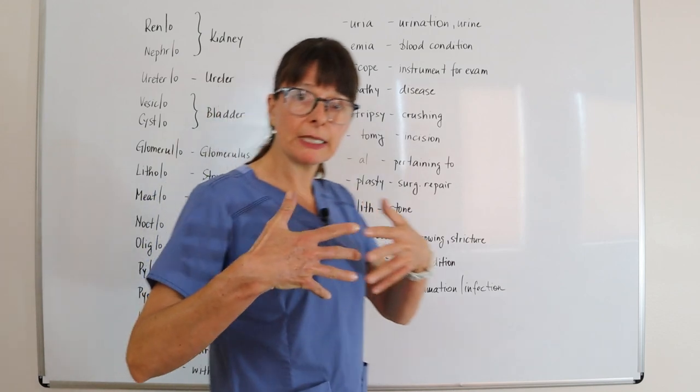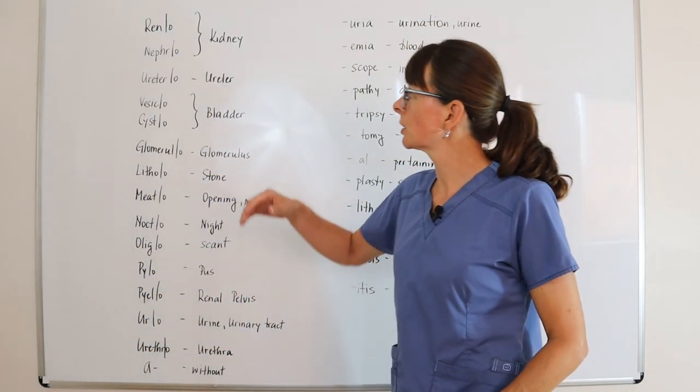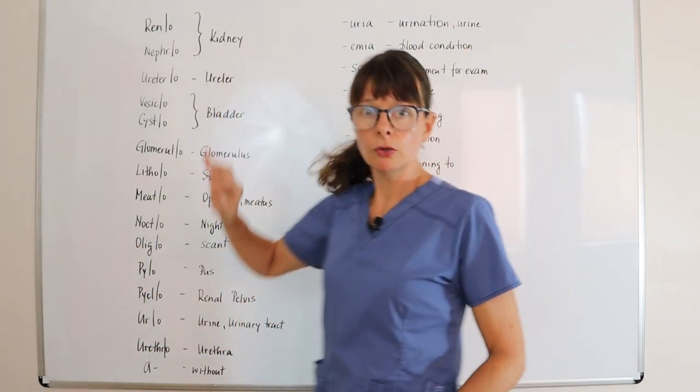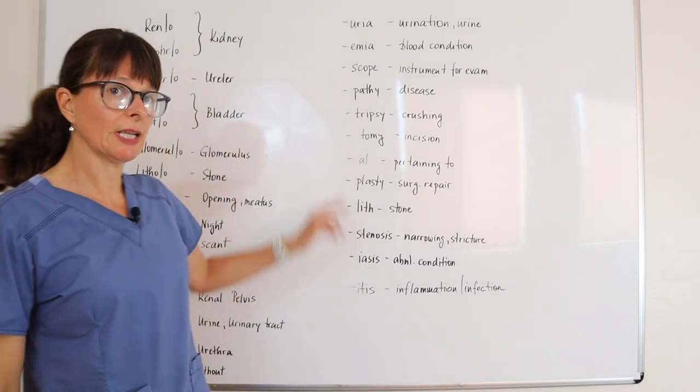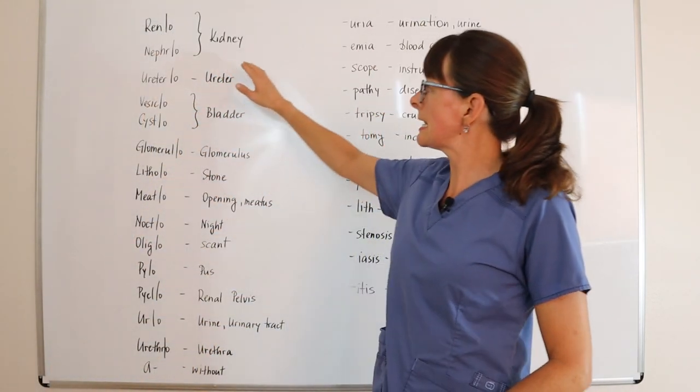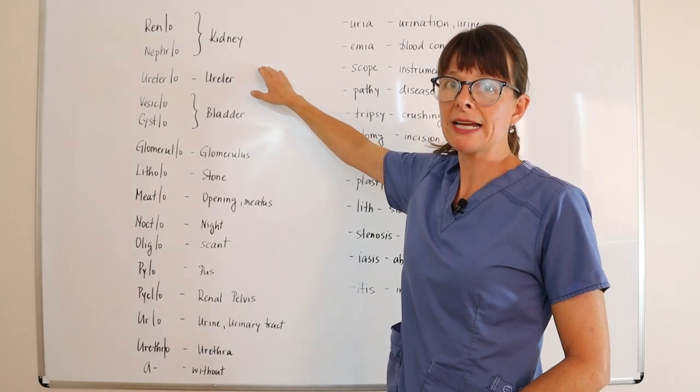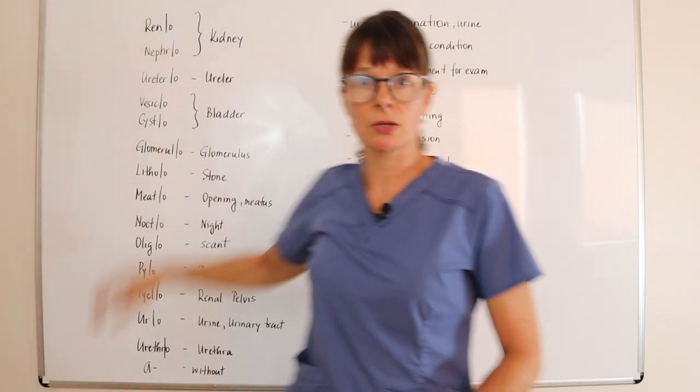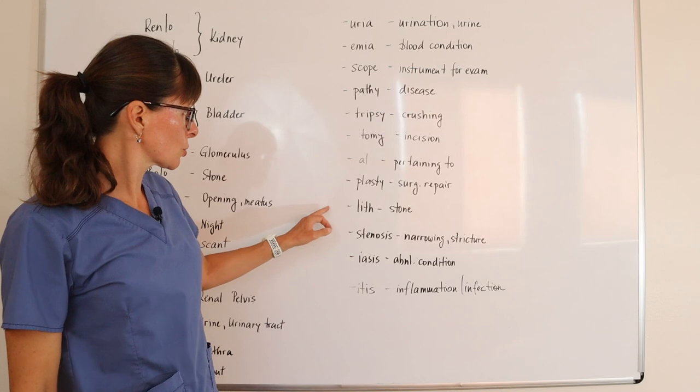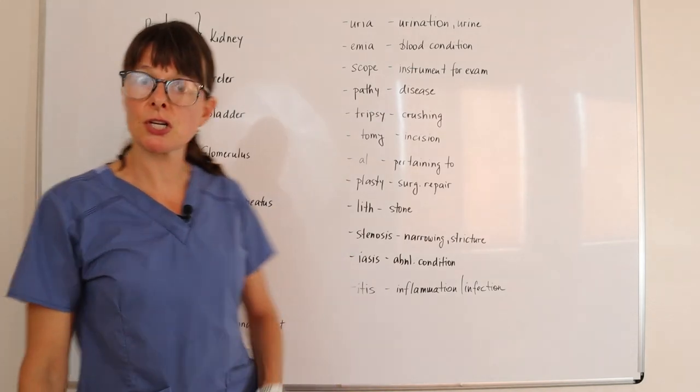Now if we combine the two, we could come up with renal, meaning pertaining to the kidney, or nephrolithiasis: nephro pertaining to the kidney, lith stone, and iasis an abnormal condition.